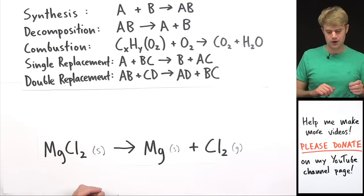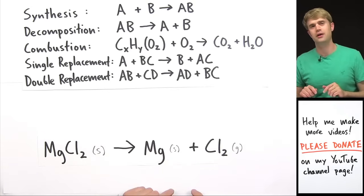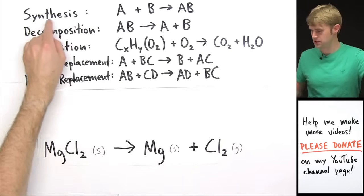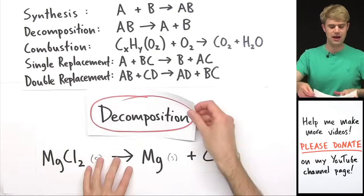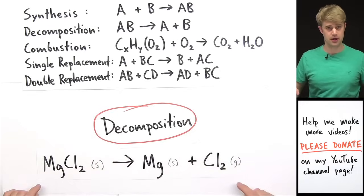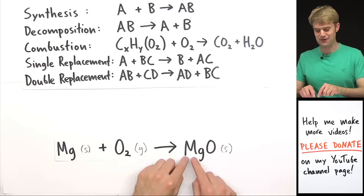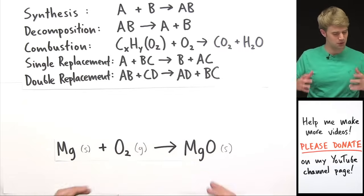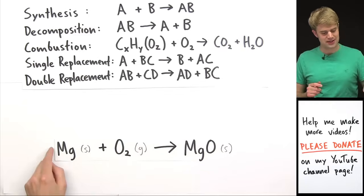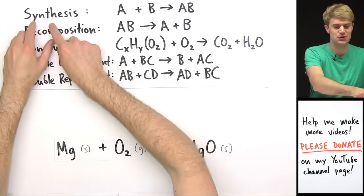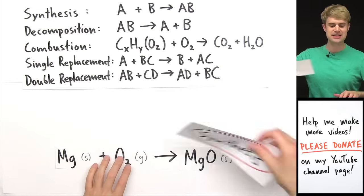Magnesium chloride turns to magnesium and chlorine gas. What's happening here is a compound is breaking down into simpler components. This is a great example of a decomposition reaction. Magnesium and oxygen combine to give magnesium oxide. So what we have here is we have two simple things coming together to make something more complex, which is what happens in a synthesis reaction.